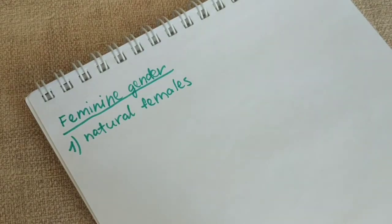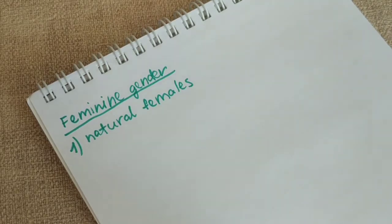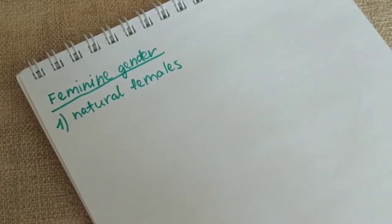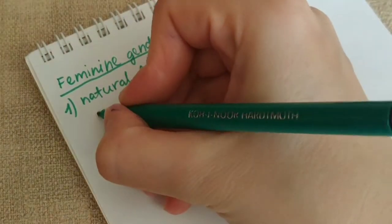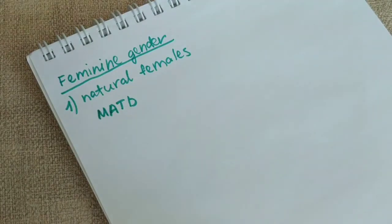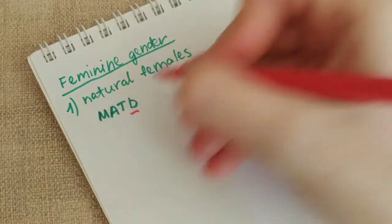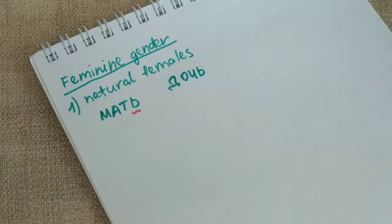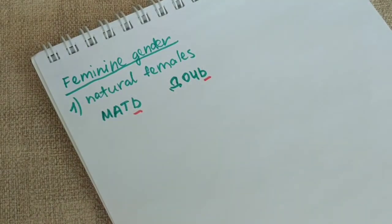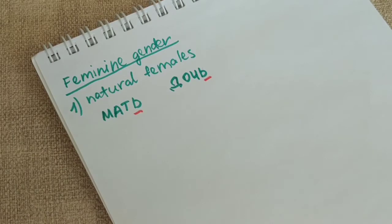Now let's go over the soft sign nouns which are of the feminine gender. The first subgroup, like with the masculine gender, is a group of nouns which denote a natural female, ending in the soft sign and thus belonging to the feminine gender. The first example is мать, meaning 'mother.' Of course it is a woman, so it is of a feminine gender, ending in the soft sign. Next, we have дочь — ending in the soft sign — meaning 'daughter.' Daughter is a person of female gender, thus the noun is of the feminine gender.